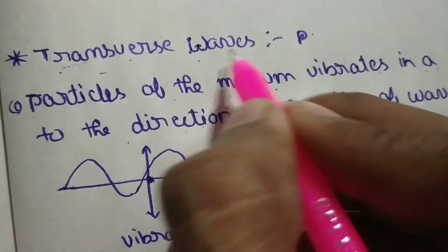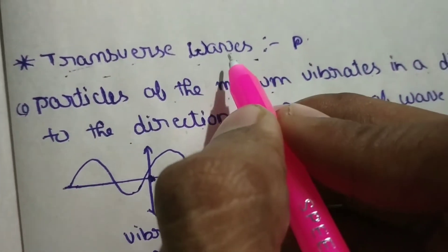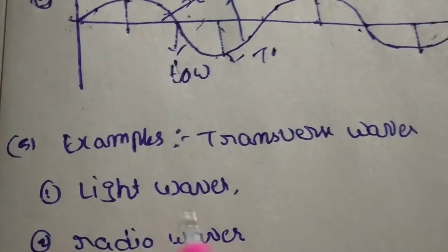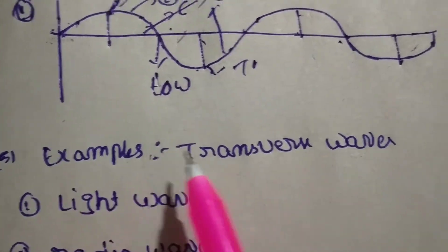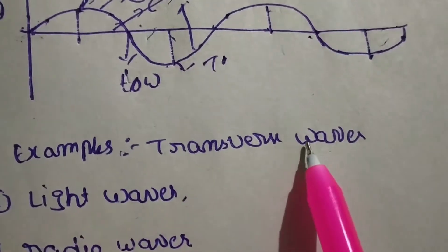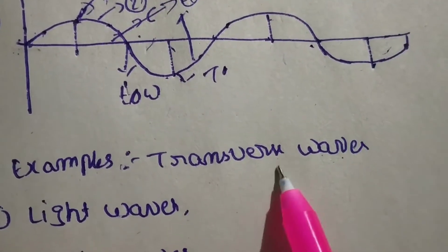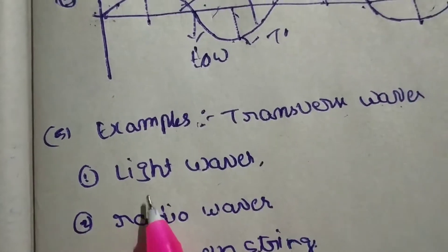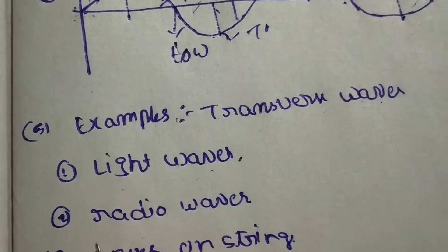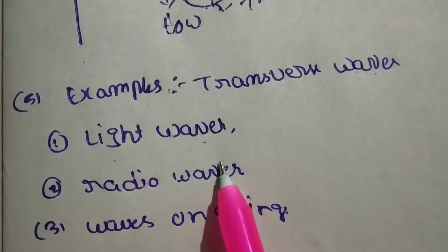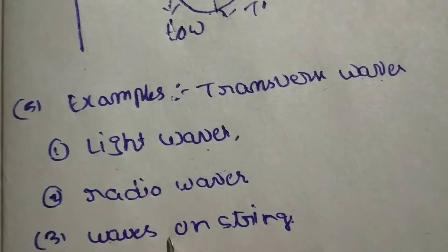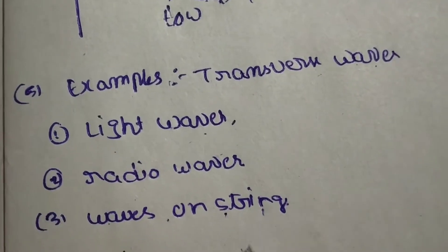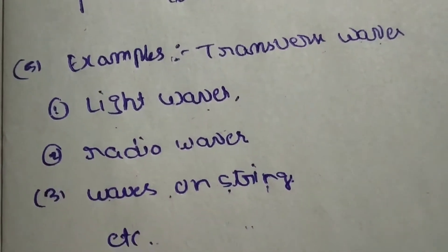Transversal waves. Examples of transversal waves: light waves, radio waves, waves on strings, et cetera.